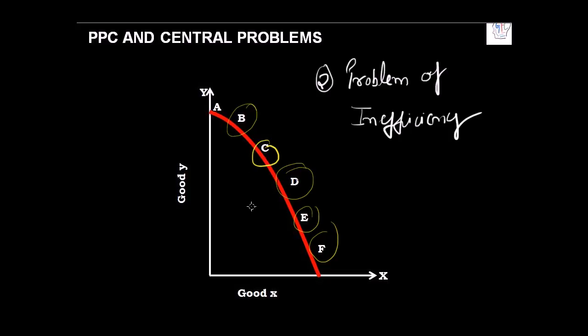But if there is a point inside the PPC curve, let me call this point X, it would show you lesser combinations of both good Y and X. This clearly tells that any point inside the PPC shows inefficiency because you are not able to produce more of either of the goods. Therefore, a point on the PPC curve shows full efficiency of resources, while a point inside the PPC curve shows inefficiency.